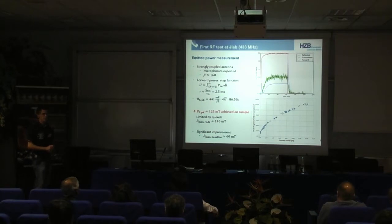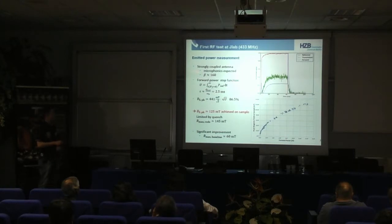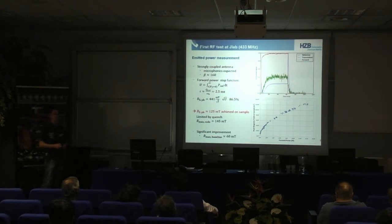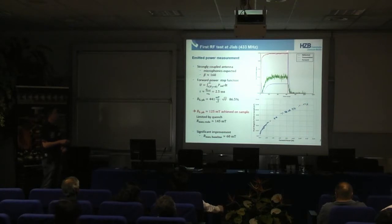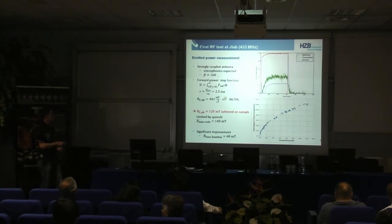First RF measurements have been done at JLAB just recently. We wanted to measure the stored energy inside of the cavity via an emitted power measurement. We have a strongly coupled antenna — a fundamental power coupler with a beta of around 160 because of expected microphonics — which broadens the resonance peak and makes life easier for the RF system. We have in red the forward power of the RF system as a step function, and we switch off the power. The stored energy from inside of the cavity comes out through the input coupler and we see this exponential decay.